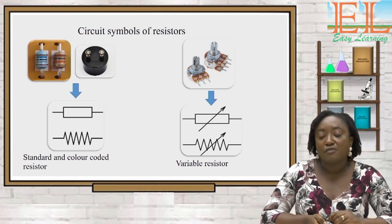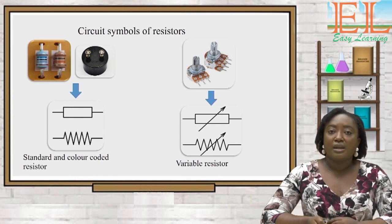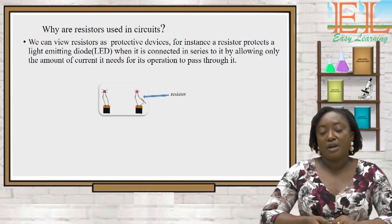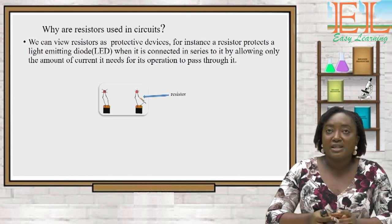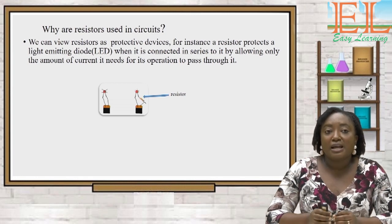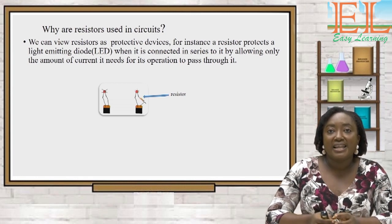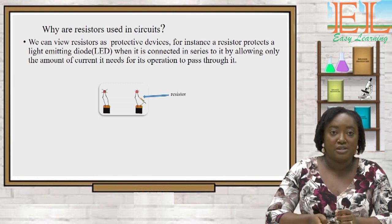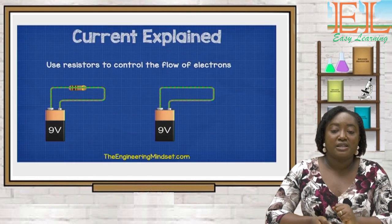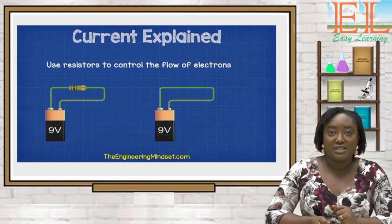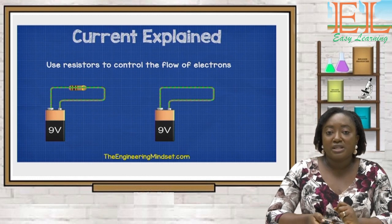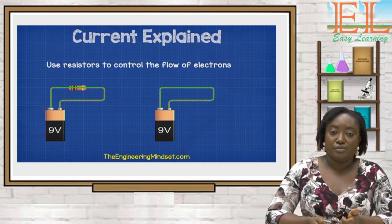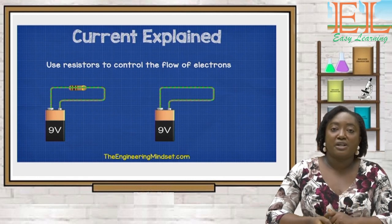For a variable resistor, either symbol would do. Why use resistors in a circuit? Think of resistors as protective devices. For instance, a resistor protects a light-emitting diode (LED) when connected in series with it, allowing only the amount of current the LED needs for its operation to pass through. In the picture, the first LED is blown off because there is no resistor; in the second picture, when the resistor is placed, the light stays on. Let's watch a video to find out why.